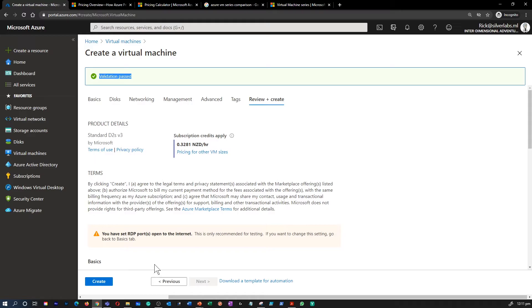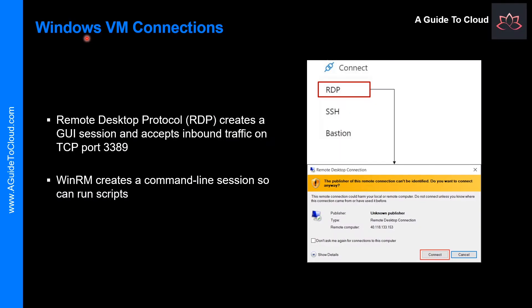To manage an Azure Windows VM, you can use the same set of tools used to deploy it. However, you'll also want to interact with the operating system running within the VM. You have various methods available: RDP, Windows Remote Management, or the Azure Bastion service.